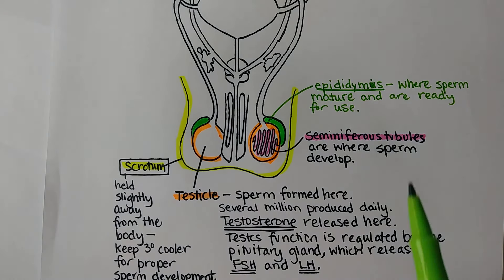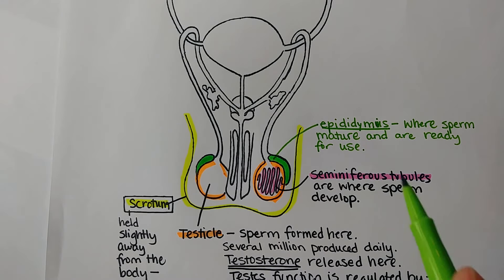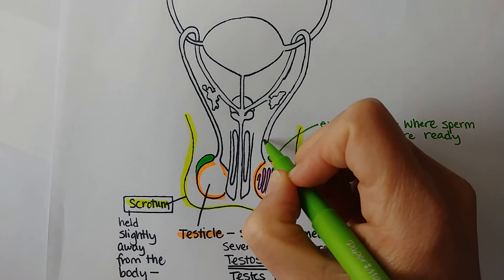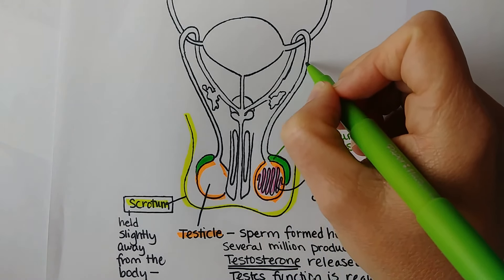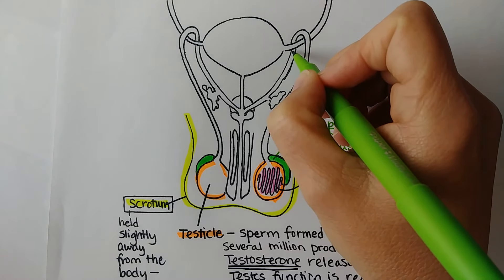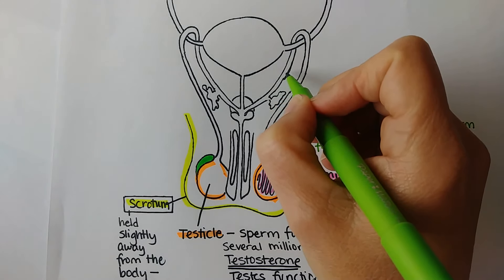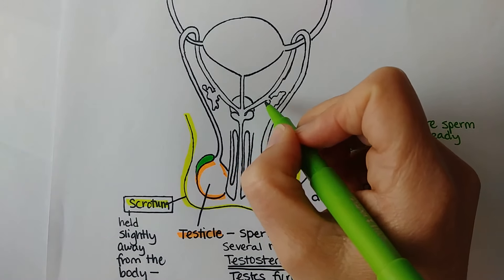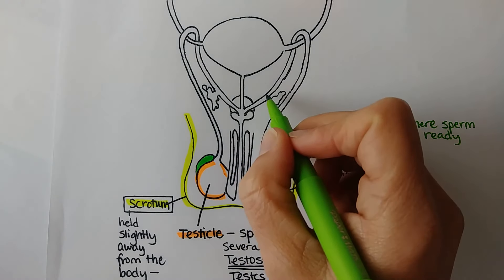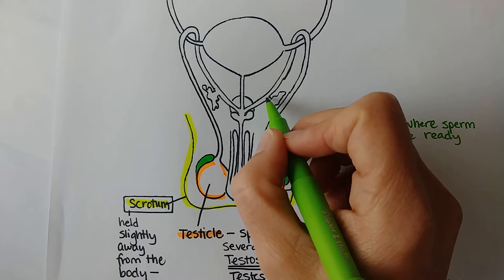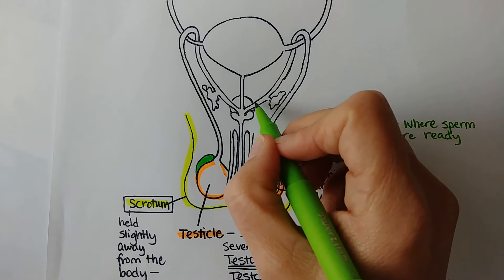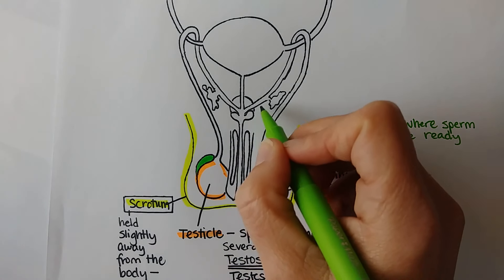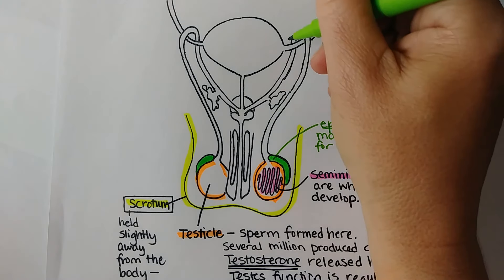During sexual arousal, the ready and mature sperm are pushed up through the vas deferens, which curls around and is about a foot long. The sperm wait in this area for the final ejaculation. When orgasm occurs, the ejaculate goes out through the penis.